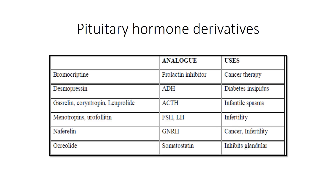Urofollitropin is an analog of LH, used for infertility. Nafarelin for GnRH, used for treatment of cancer. These are the ones that were asked in earlier papers, so I picked them up and put them together.